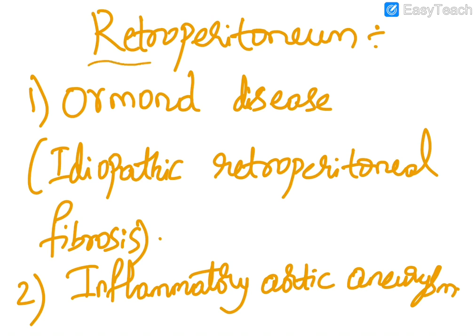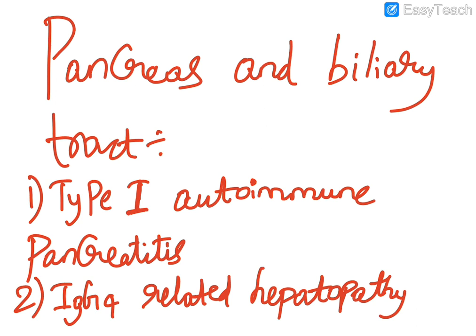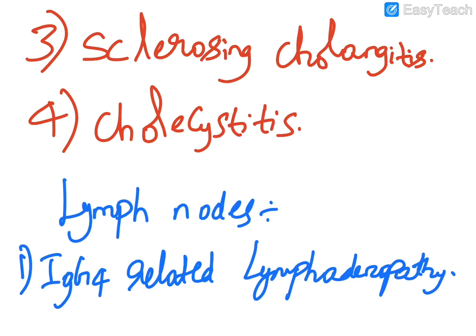Retroperitoneal manifestations of IgG4 related disease include Ormond disease, which is idiopathic retroperitoneal fibrosis, and inflammatory aortic aneurysm. Pancreas and biliary tract manifestations include type 1 autoimmune pancreatitis, IgG4 related hepatopathy, sclerosing cholangitis, and cholecystitis.